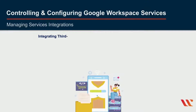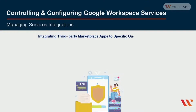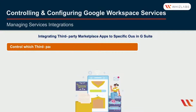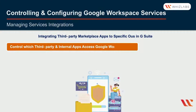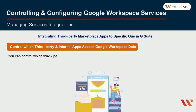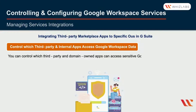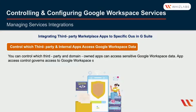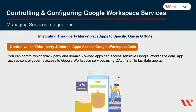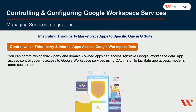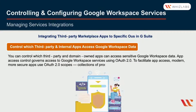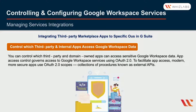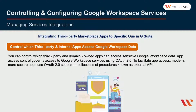Let us learn about integrating third-party marketplace apps to Google Workspace and how to control which third-party and internal apps will have access to Google Workspace data. Application access control governs access to Google Workspace services with the help of OAuth 2.0. Modern and more secure apps use OAuth 2.0 scopes — collections of procedures known as external APIs — which provide access to limited user data from Google Workspace services such as Gmail, Google Drive, Calendar, and Contacts.